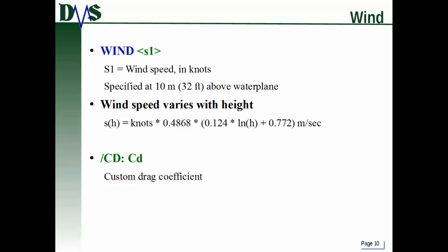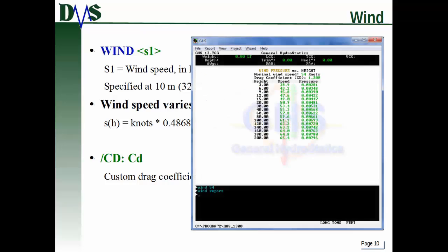When you do that, it's using this conversion formula: the wind speed in knots times a conversion factor for unit conversions, and this function actually varies with height above the waterline. There's also the CD option for the wind command, which allows you to specify a custom drag coefficient for all of your different structure elements, using CD colon and then your actual value. Here's an example output: I specified wind 54, then asked for a report of the wind definition, and you can see the wind speed does change with height above the waterline.